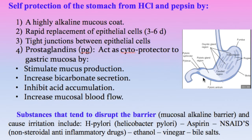We should mention substances that may hurt the stomach wall or disturb the mucosal barrier. These include H. pylori (Helicobacter pylori), a bacteria that can survive in acidic media, multiply, disturb the mucosal barrier, and even cause peptic ulcer or gastric carcinoma. The second group is drugs like aspirin and non-steroidal anti-inflammatory drugs, as well as substances like alcohol and vinegar — all of these can disturb the barrier and cause peptic ulcer.